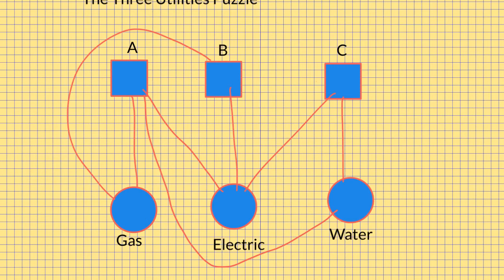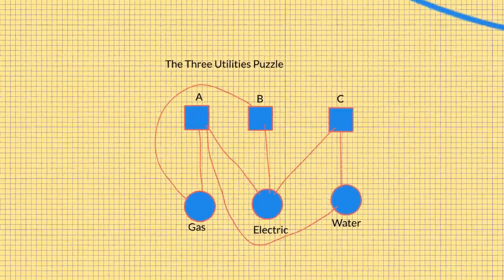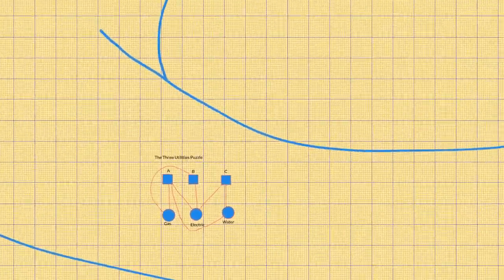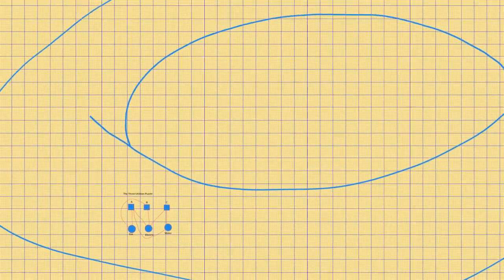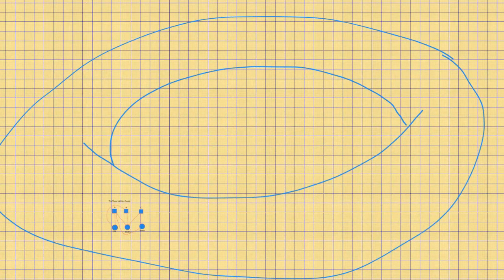But as I said, if we constrain ourselves to a plane, we can't do it. But what if we're on a torus? Better known as a donut or bagel.